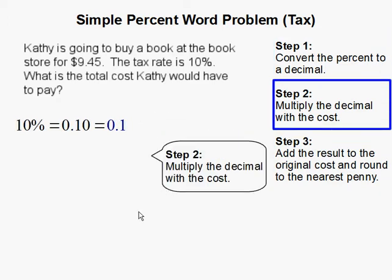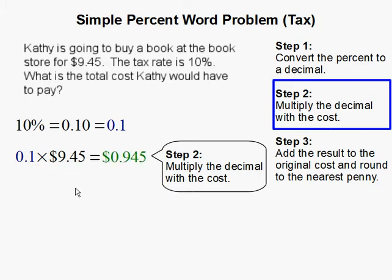Step 2: Multiply the decimal with the cost. So our decimal is 0.1, and we are going to multiply that with the cost of the book, which is $9.45. Then we are going to get 0.945.